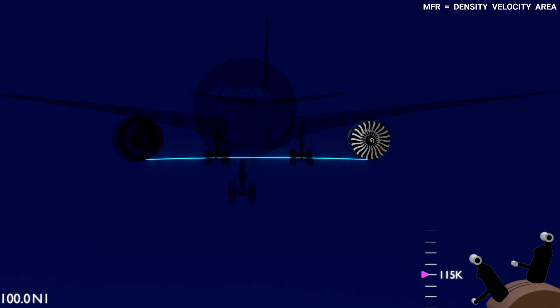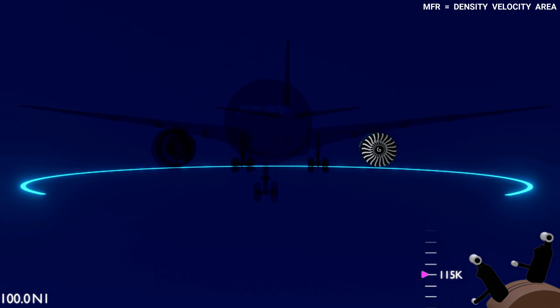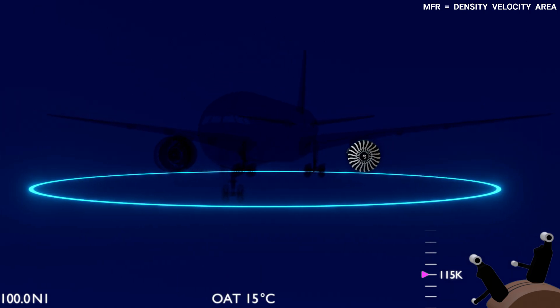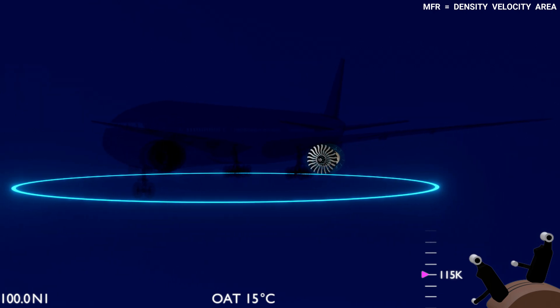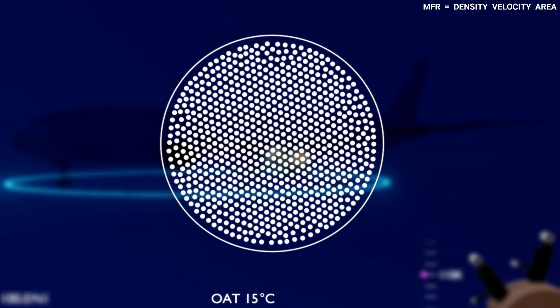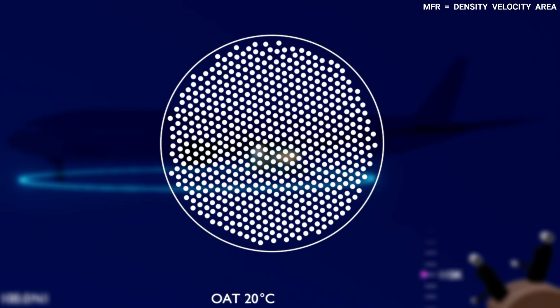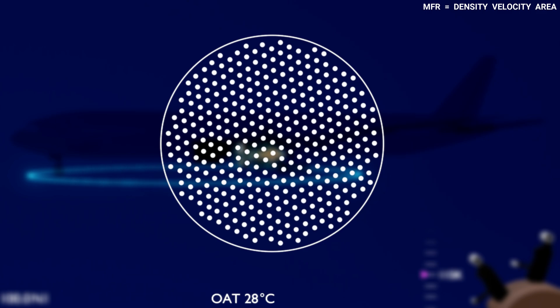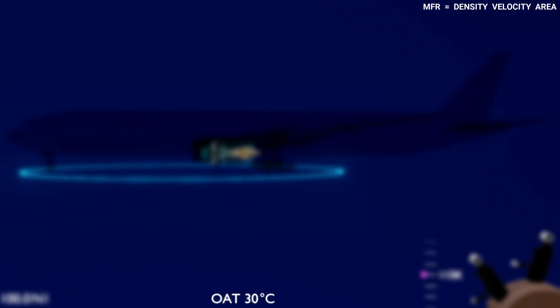The engine rated thrust is generally determined in the standard atmospheric condition, where the outside air temperature is 15 degrees Celsius. But the engines installed on the aircraft will operate in changing environmental conditions. The air density decreases as the temperature of the atmosphere increases. This compromises the engine's ability to maintain the mass flow rate. Let's understand how the engine compensates for changing air density in different atmospheric conditions.